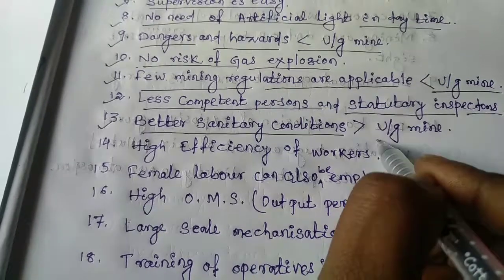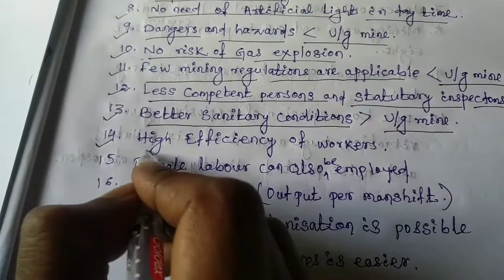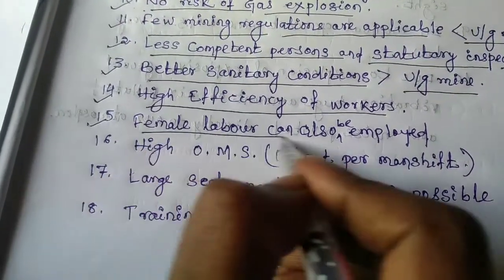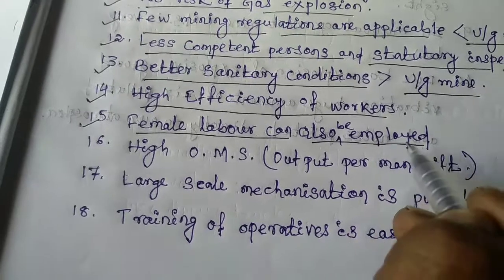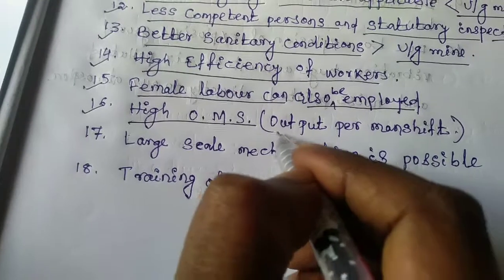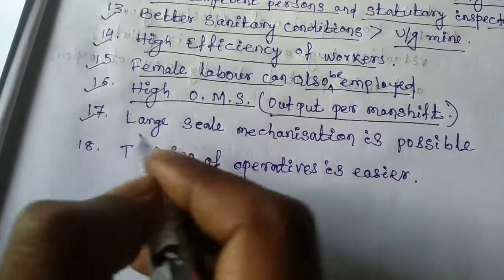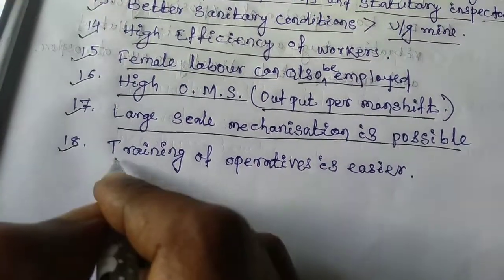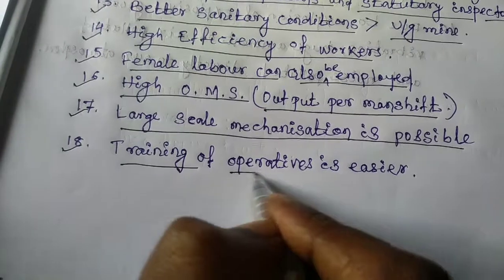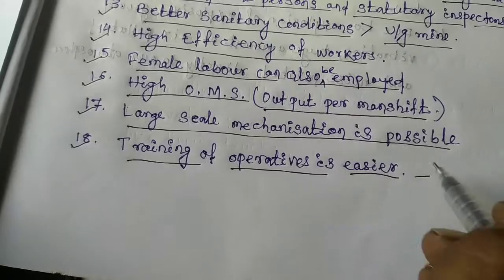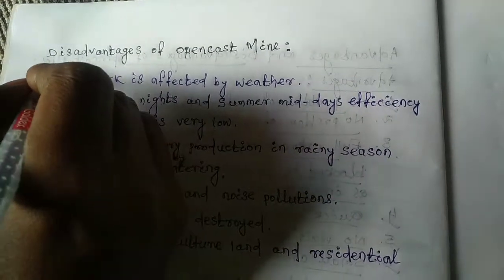Twelfth, less competent persons and statutory inspections. Thirteenth, better sanitary conditions than underground mine. Fourteenth, high efficiency of workers. Fifteenth, female labor can also be employed. Sixteenth, high OMS means high output per man shift. Seventeenth, large scale of mechanization is possible. Eighteenth, training of operatives is easier than underground mine. Now we discuss about disadvantages of opencast mine.